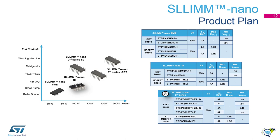The table in the middle shows SLIMnano through-hole, which has the same current rating and is pin-to-pin compatible with the SMD version. At the bottom is the table for SLIMnano second series through-hole. As this is a bigger package, it increases the current rating up to 8 Amperes. Considering the package size and integration level, the SLIMnano has low losses, making it perfect for compact end products.